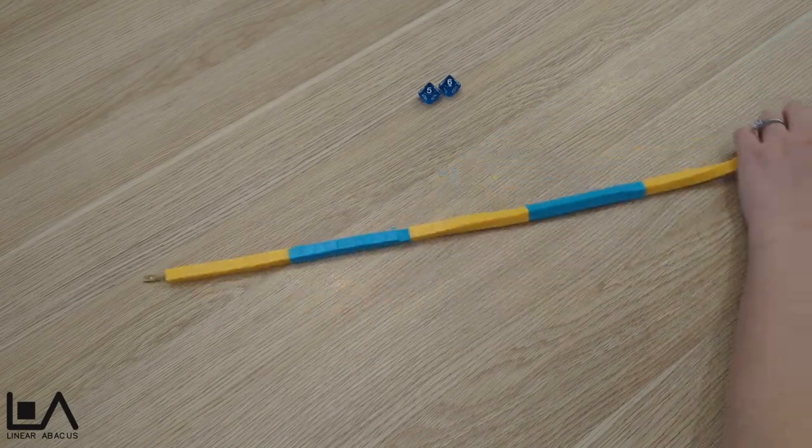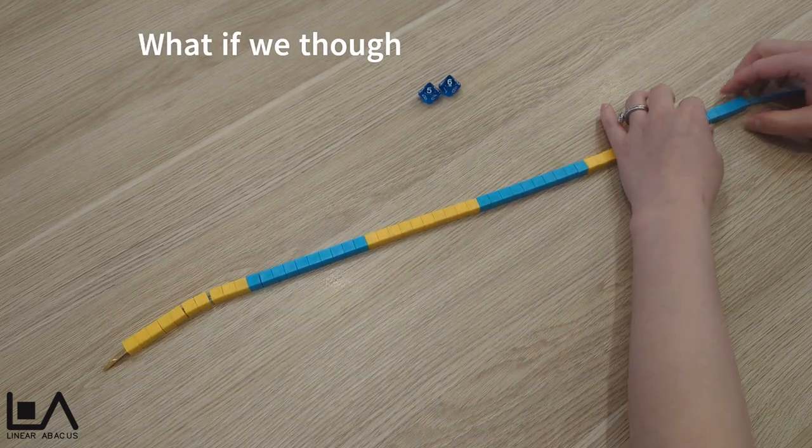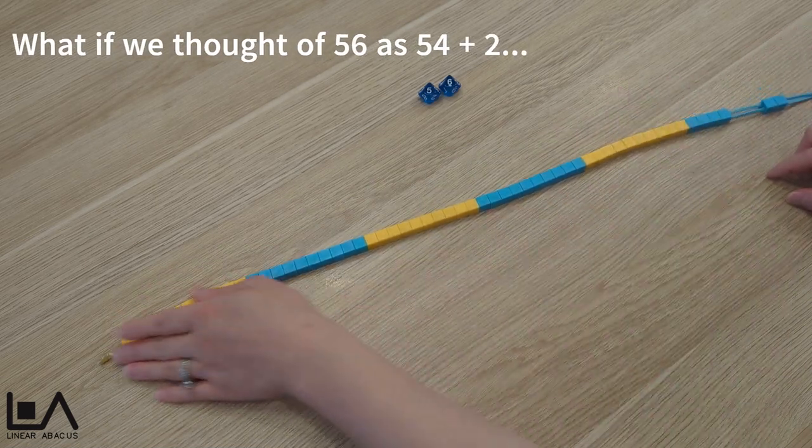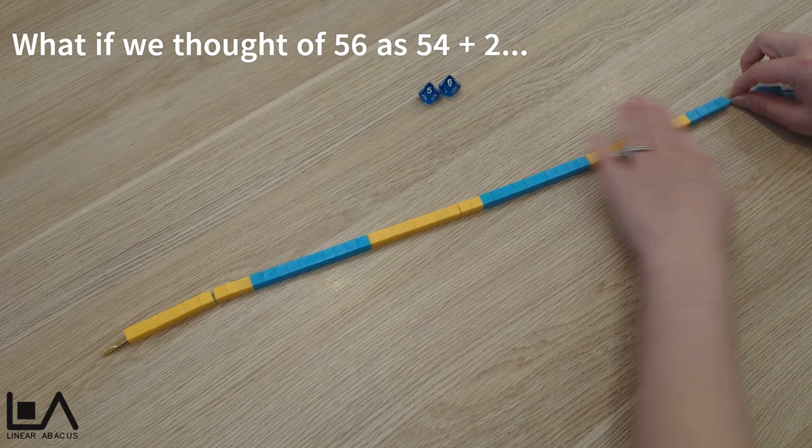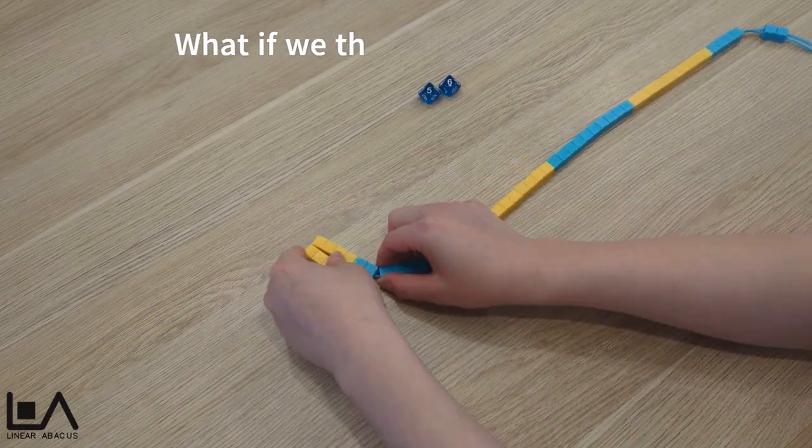Let's look at another way to get to the 56th bead. In this example, we will partition the number 56 into 54 and 2. To get to the 54th bead, we are trialling a different group size.